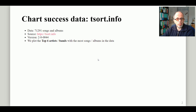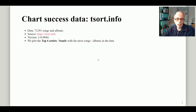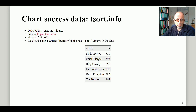The dataset that I'm using — you can find it on my GitHub profile as well — contains data for over 70,000 songs and albums. We just focus on the top 6 artists and bands in terms of the number of songs and albums they placed in the data. Elvis Presley is top with 510 entries, and the Beatles just made the top 6 with 267 entries.